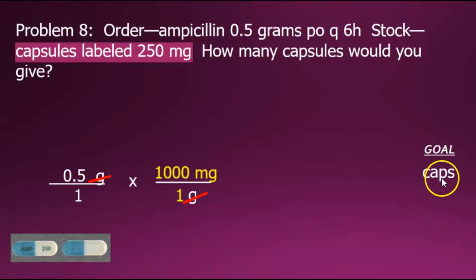Our goal is capsules, so we need one more conversion factor using the information supplied in the problem. We need to create our conversion fraction so that milligrams cancel out. Since our order is currently in milligrams, we'll place milligrams in the denominator.